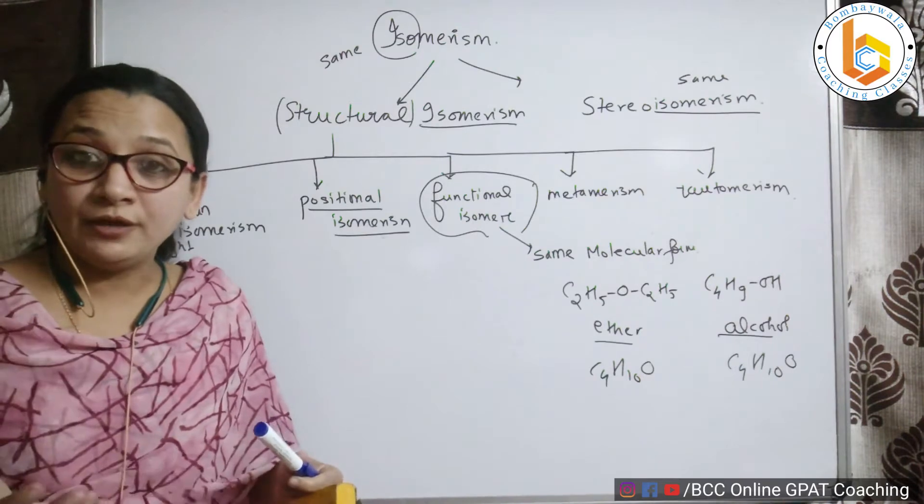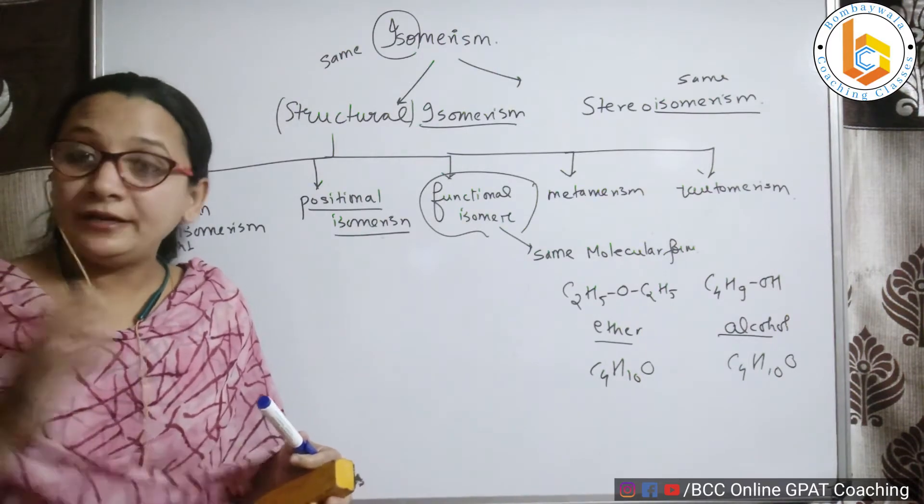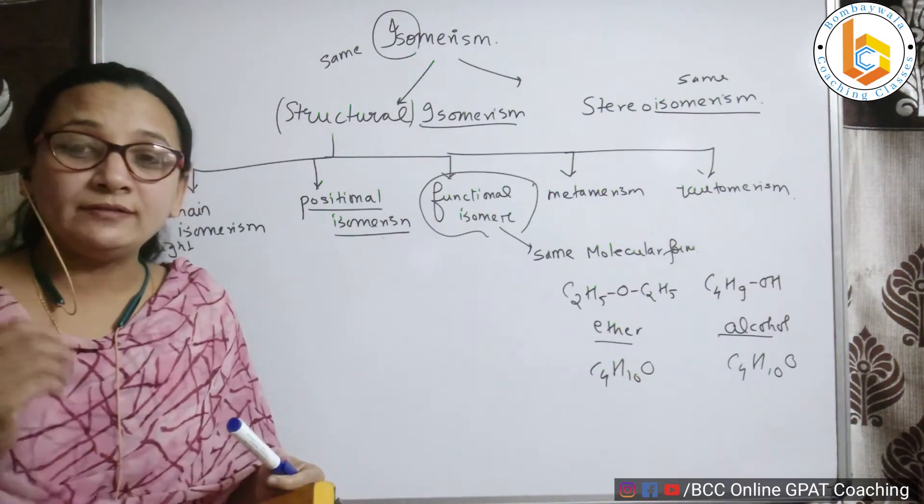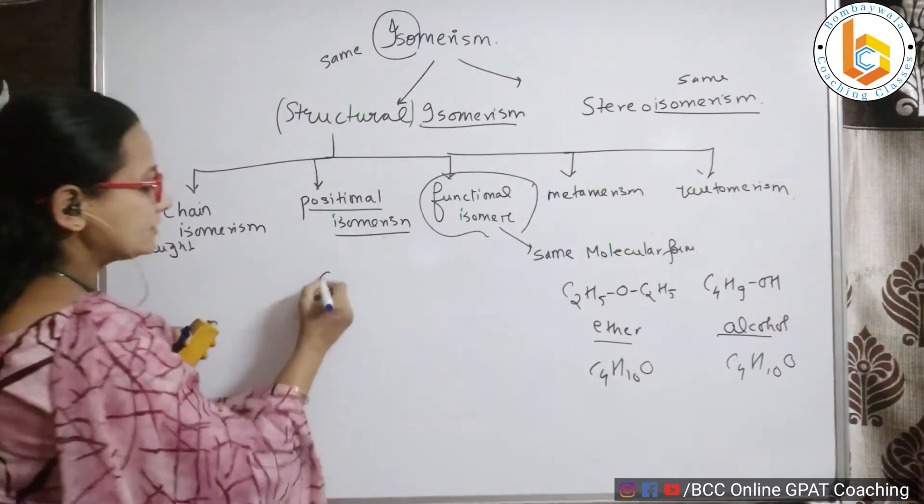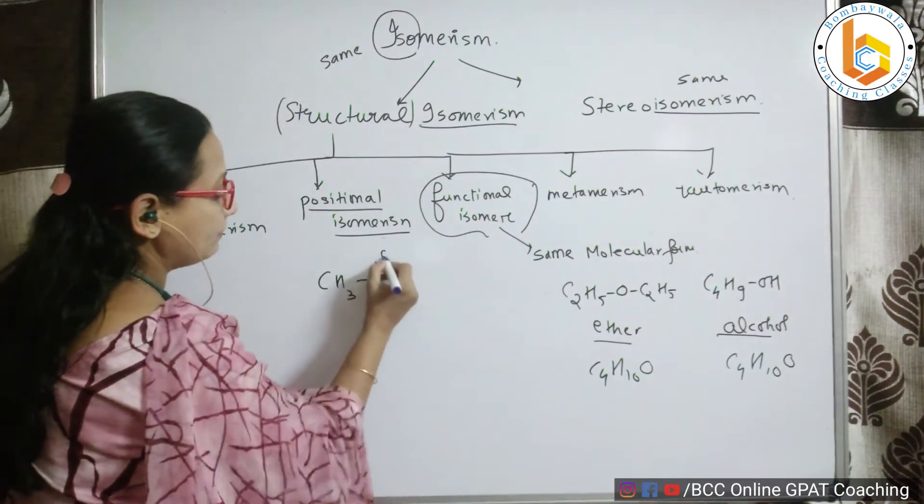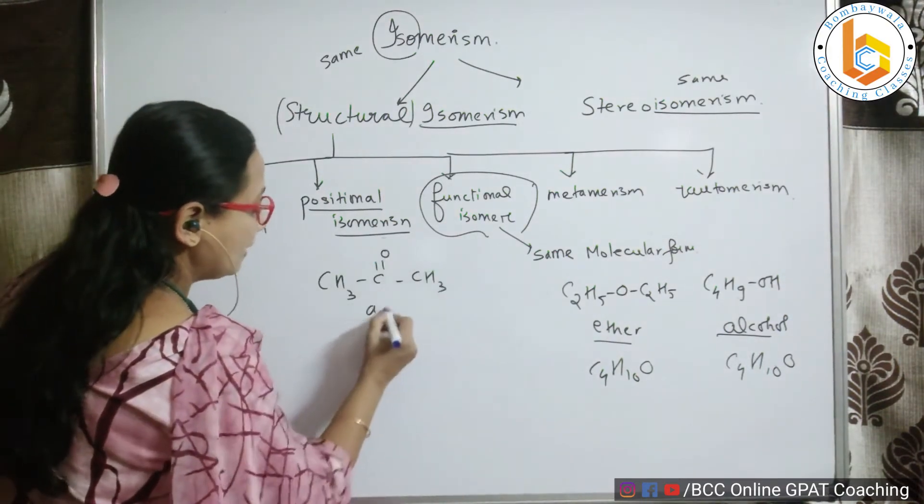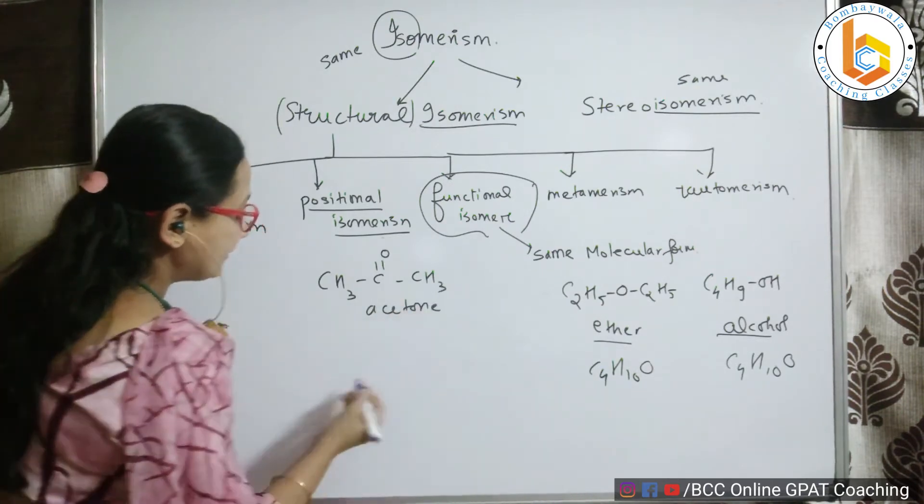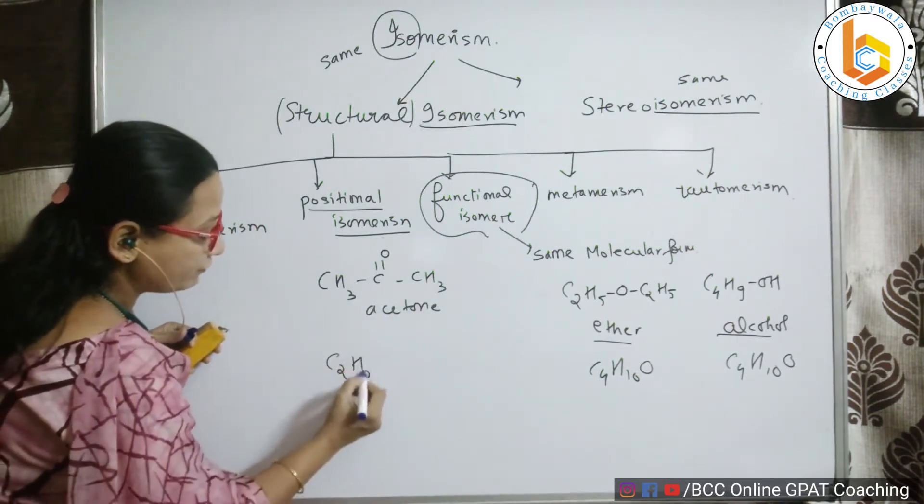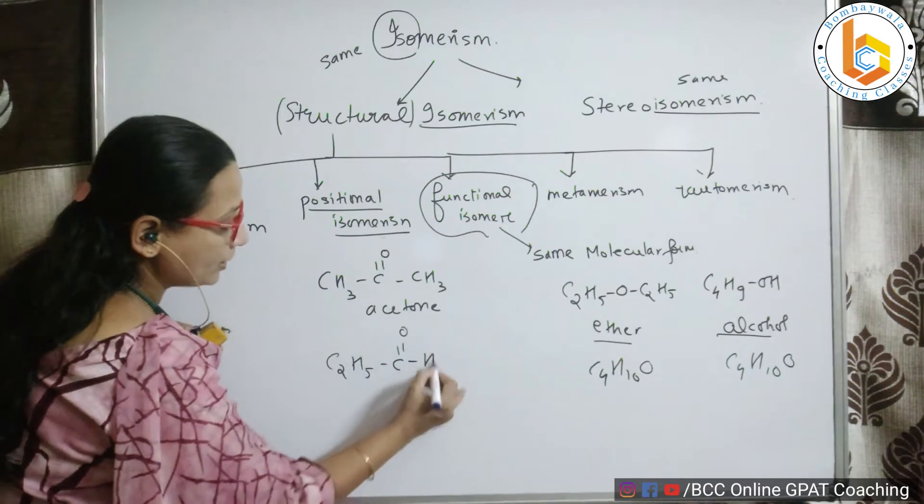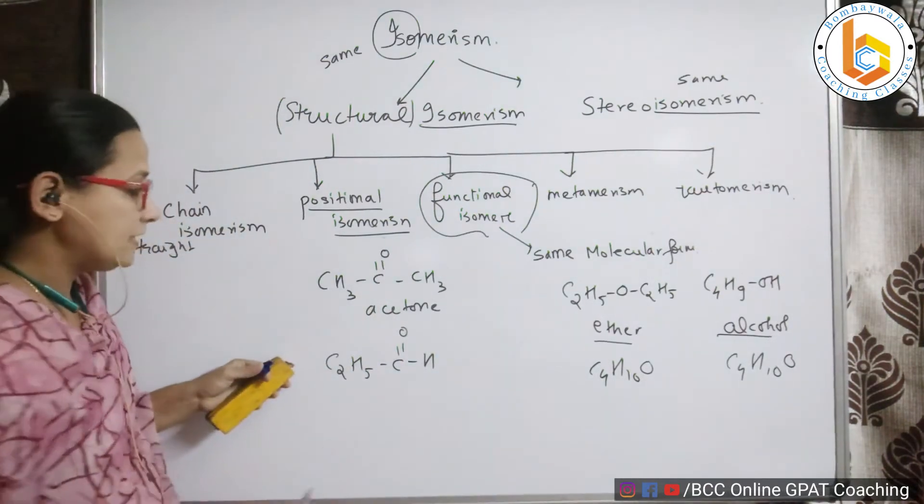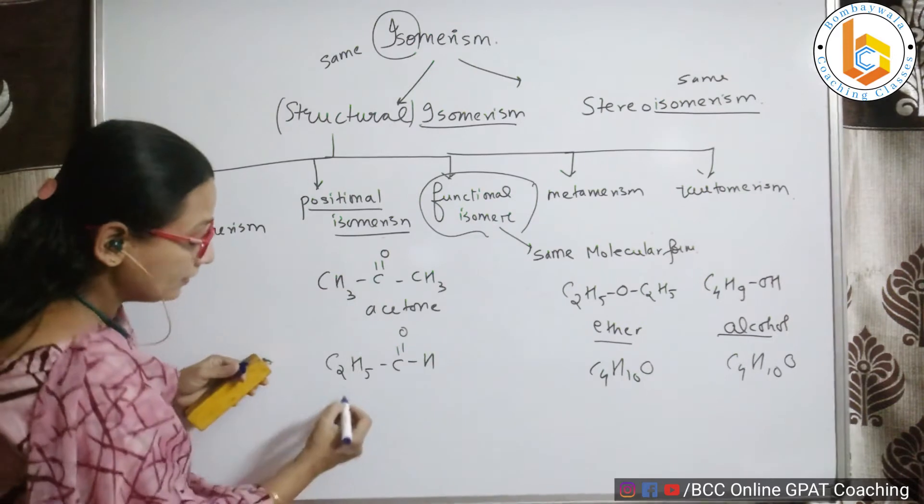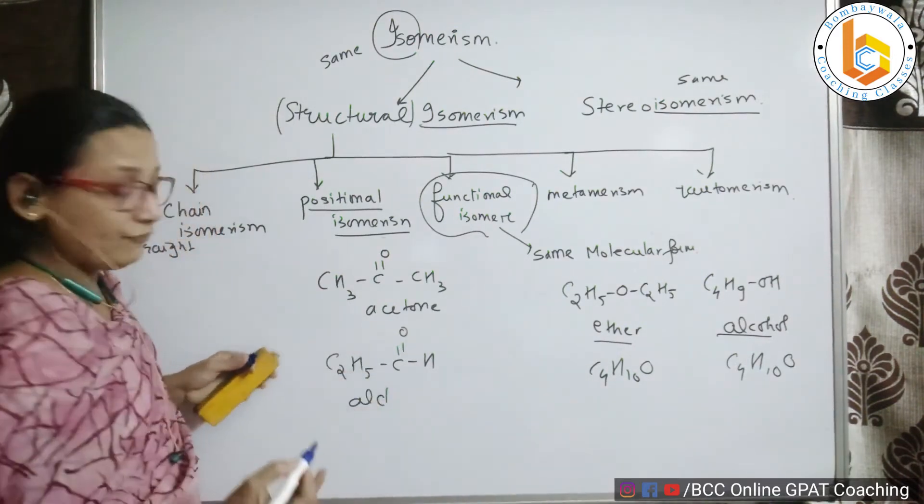Another example of functional isomers can be given as aldehyde or ketone. Have a look at this example. For example, this is acetone: CH3-C=O-CH3. If I take something like this: C2H5-C=O-H. Now look at the molecular formula.